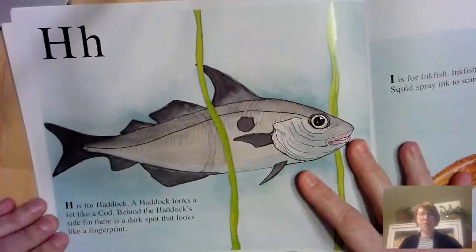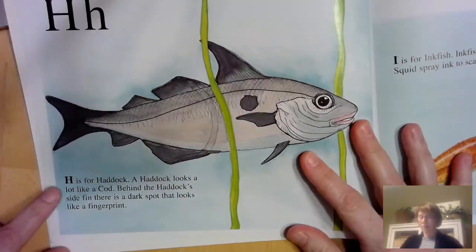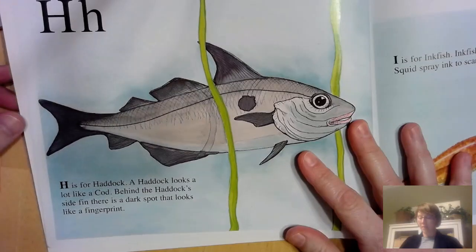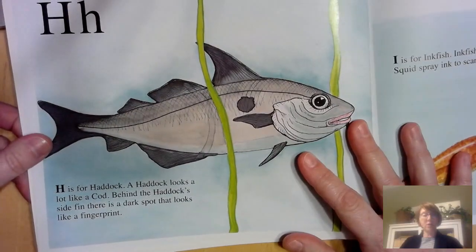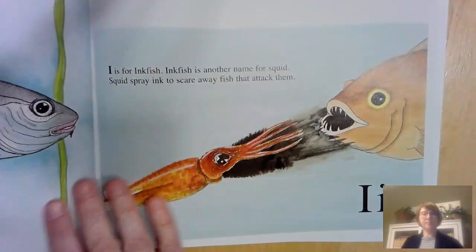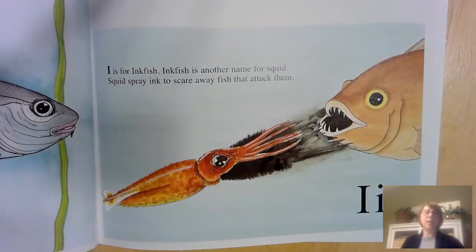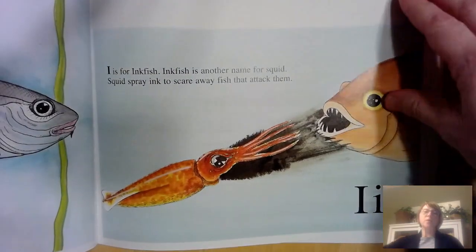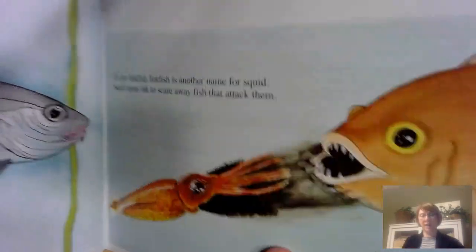H is for haddock. A haddock looks a lot like a cod. Behind the haddock's side fin, there's a dark spot that looks like a fingerprint. I is for inkfish. Inkfish is another name for squid. Squid spray ink to scare away fish that attack them.